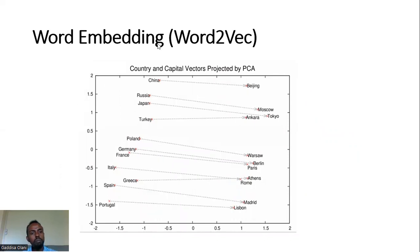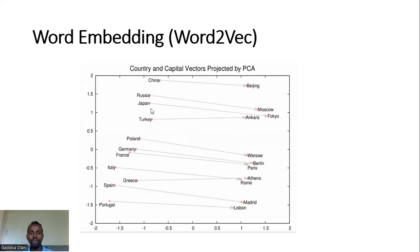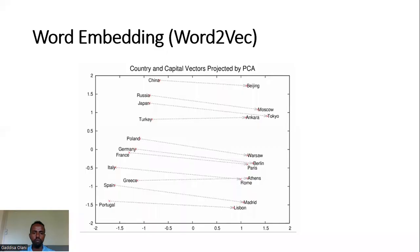For example, relationships between countries and capitals are captured — China is very close to Beijing in the vector space, reflecting the same kind of relationships. The system is built so that context and relationships are encoded in the embeddings.